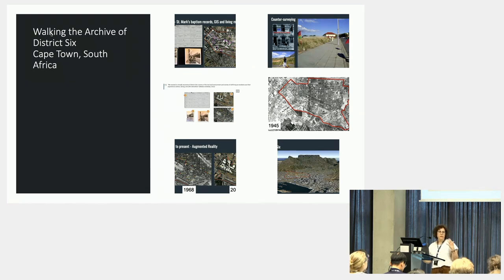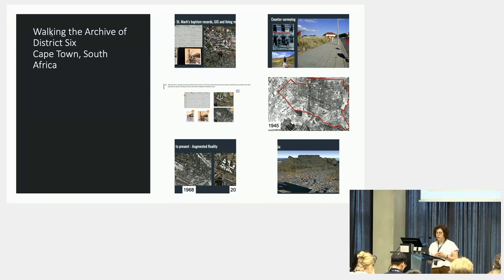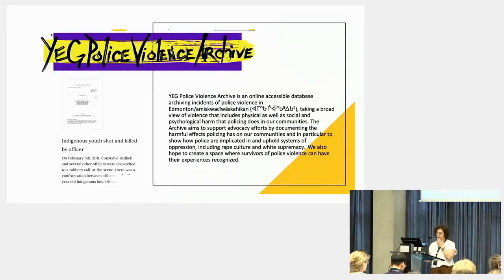This is just a taster of some of the case studies. We have about 25 at the moment, some done, some in progress. One of them is 'Walking the Archive of District 6 in Cape Town,' a collaboration between an engineer at the University of Cape Town and an archivist at the University of Michigan. They describe an interdisciplinary project using new technologies to surface individual and community memories subjected to forced removal from District 6, hoping to advance social justice around this history.